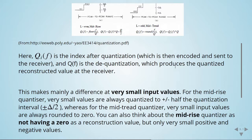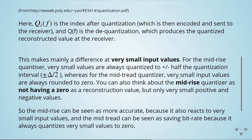So we can see the mid-rise quantizer as not having a zero as a reconstruction value, but only small positive and negative values.